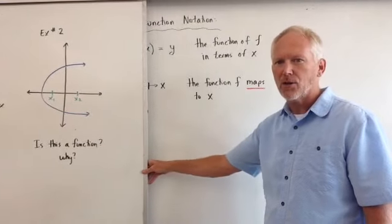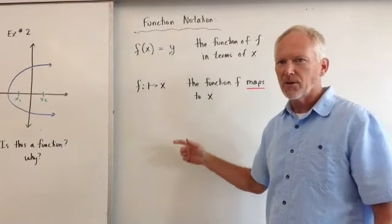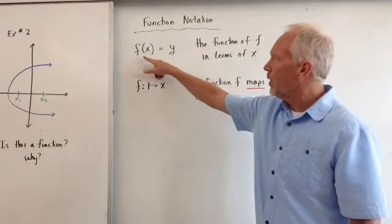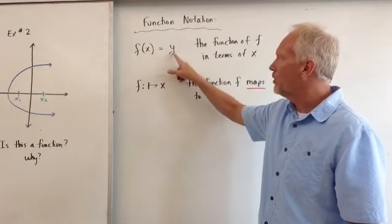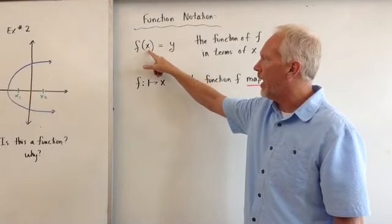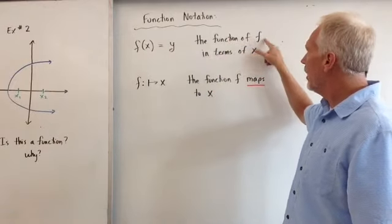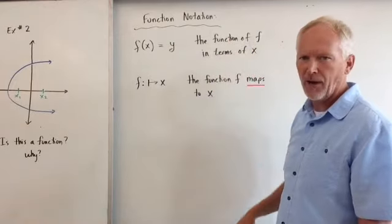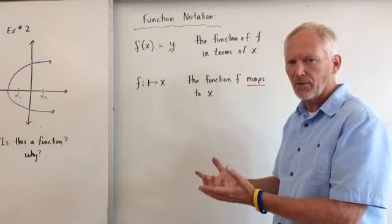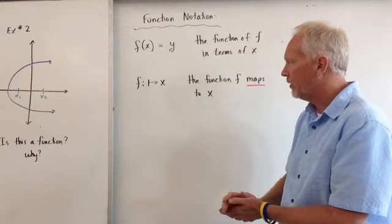Now we look at some function notation. Some final pieces here. Function notation. We have f of x is equal to y. The function of x as it results in a y value. The function of f in terms of x. Everything is in terms of x to produce a y value.